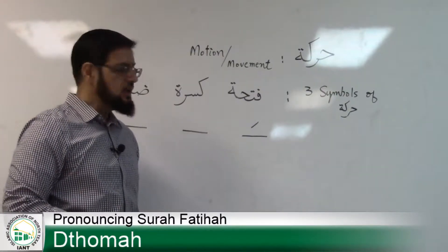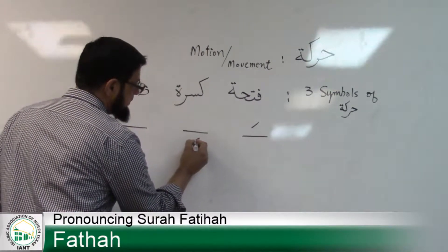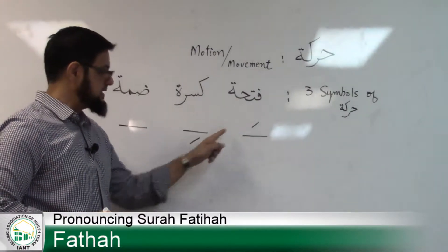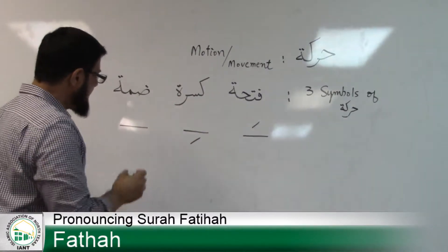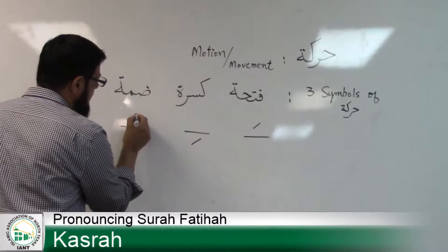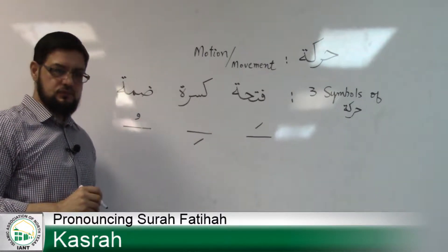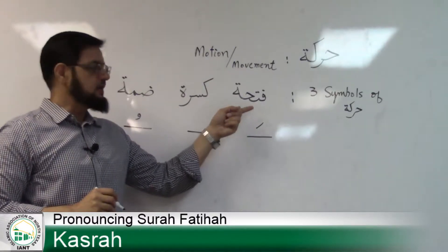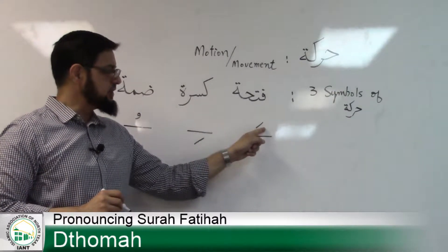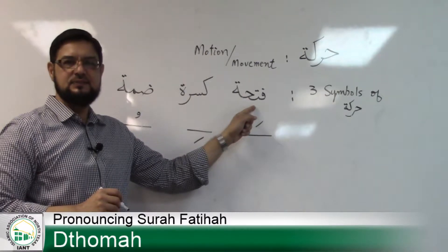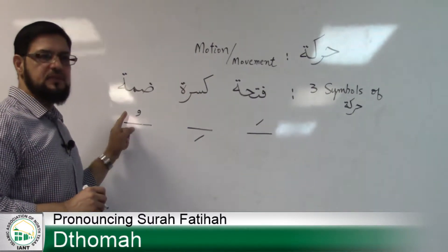The same slanting slash underneath a letter — if it is underneath a letter, same slanting slash — we call it Kasra. If there is a small waw shape at the top of a letter, we call it Dhammah. So: a slanting slash at the top of a letter is Fathah, a slanting slash underneath a letter is Kasra, and a small waw at the top of a letter is Dhammah.